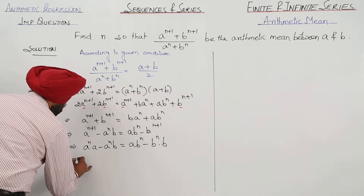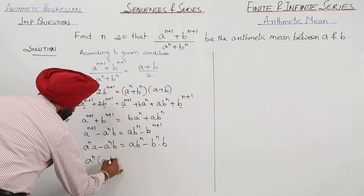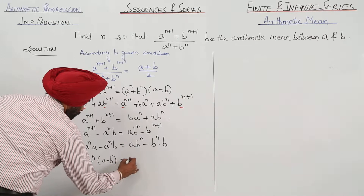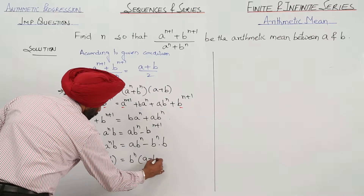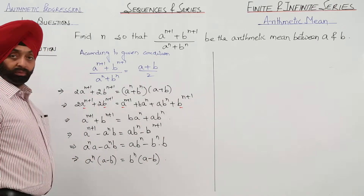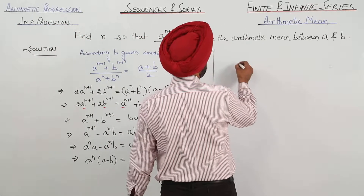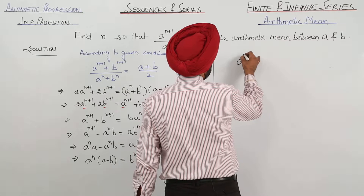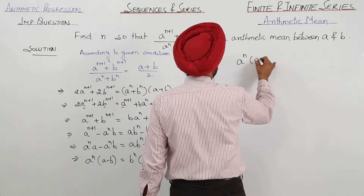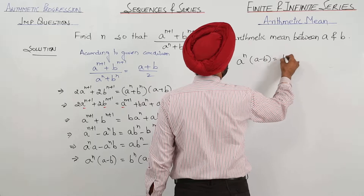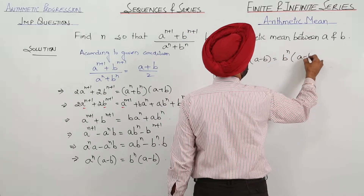This becomes a raised to power n times a minus b equals b raised to power n times a minus b. So, we are having a raised to power n times a minus b equal to b raised to power n times a minus b.